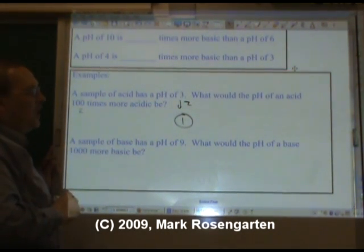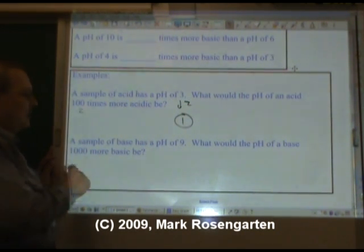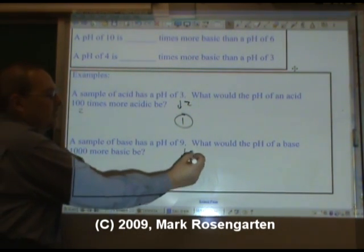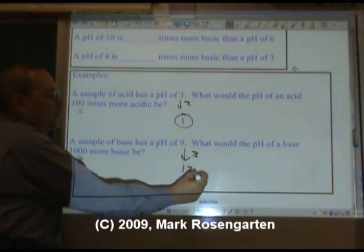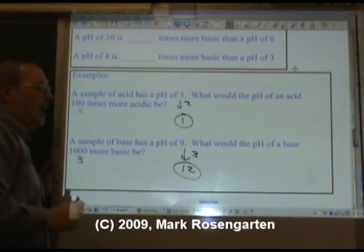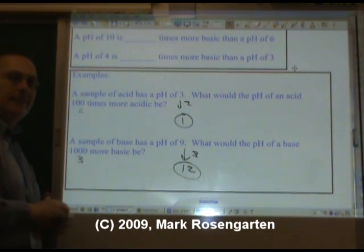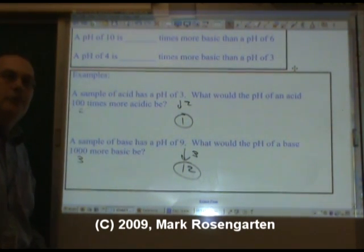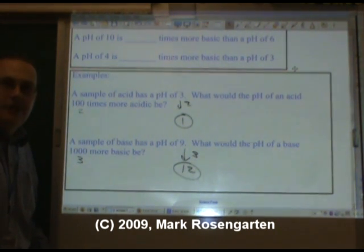Sample of base has a pH of nine. What would the pH of the base that's a thousand times more basic be? Thousand is three powers of ten. So we're going to raise this number by three. A pH of twelve is a thousand times more basic than a pH of nine. And that's as far as we need to take pH in a Regents Chemistry course. Stay tuned for more advanced stuff where we actually calculate the pH of a solution later on in the year.